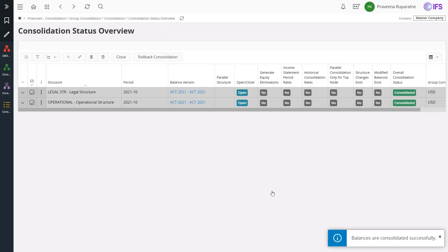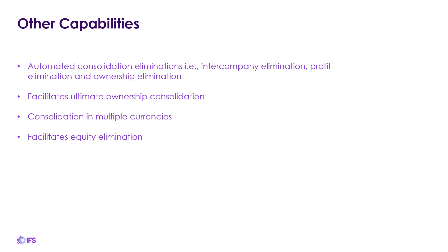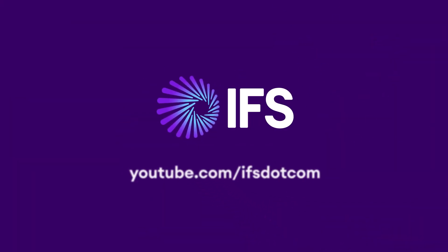Now let's see some more functionalities that support many changing business operations in legal and operational structures. IFS consolidation functionality has inbuilt automated consolidated elimination which is executed based on the consolidation method selected in the consolidation structure. It also facilitates the ultimate ownership and provides flexibility in executing the consolidation in multiple currencies, and facilitates the equity elimination. With that, we have come to the end of this video.